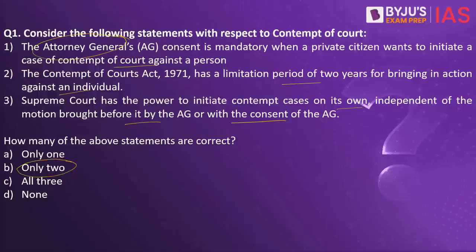So the first statement is right. The Contempt of Courts Act of 1971 has a limitation period of two years — this statement is wrong. The limitation period is one year, not two years. So the second statement is wrong. When you consider the third statement, the Supreme Court has the power to initiate contempt cases on its own — that is, take suo motu cognizance. It need not wait for the AG's consent; if it feels someone has violated, contempt proceedings can be taken up suo motu. So the third statement is also right.